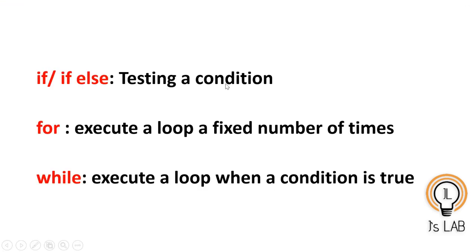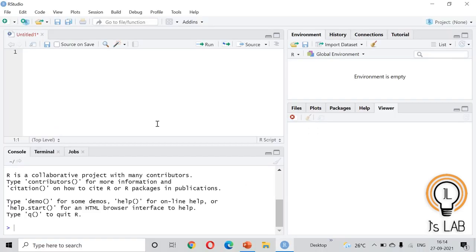The basic control structures are: first, 'if' or 'if-else', used to test a condition and perform an operation. 'For' is used to execute a loop a fixed number of times. 'While' is used to execute a loop when a condition is true — if while is not used properly it may execute the loop infinite times. Other structures like repeat, break, next, and return are rarely used and will be explained in a separate video.